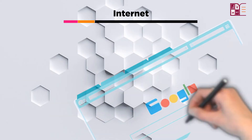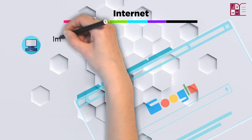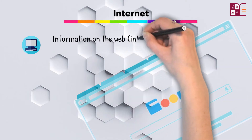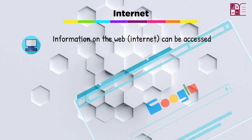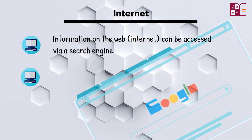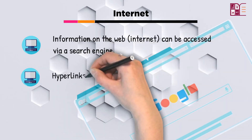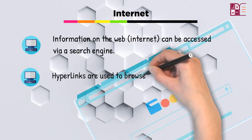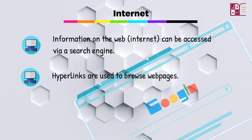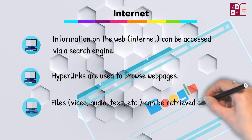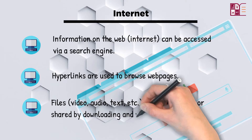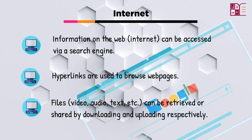Information on the web can be accessed via a search engine. Hyperlinks are used to browse web pages, whereas files like video, audio, text, etc. can be retrieved or shared by downloading and uploading respectively.